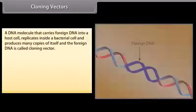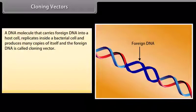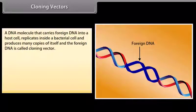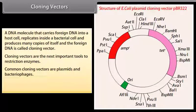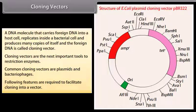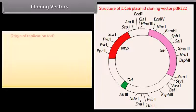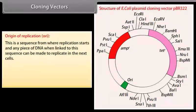A DNA molecule that carries foreign DNA into a host cell, replicates inside a bacterial cell, and produces many copies of itself and the foreign DNA is called a cloning vector. Cloning vectors are the next important tools after restriction enzymes. Common cloning vectors are plasmids and bacteriophages. Following features are required to facilitate cloning into a vector: origin of replication. This is a sequence from where replication starts; any piece of DNA when linked to this sequence can be made to replicate in the host cells.